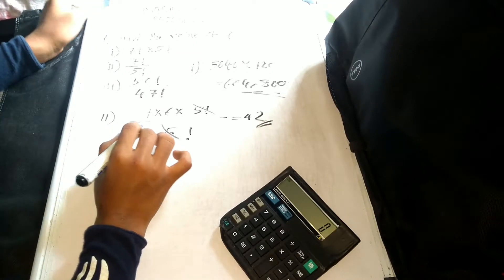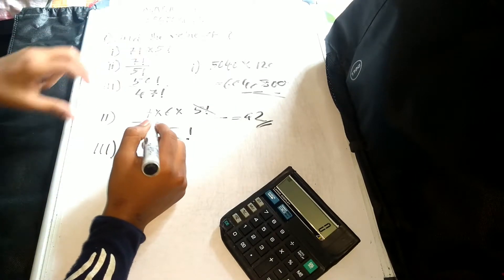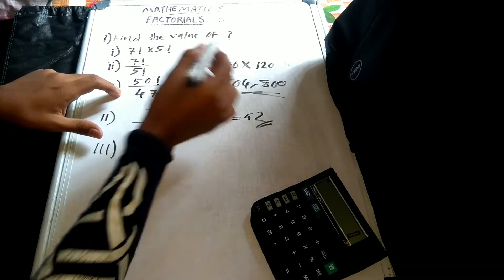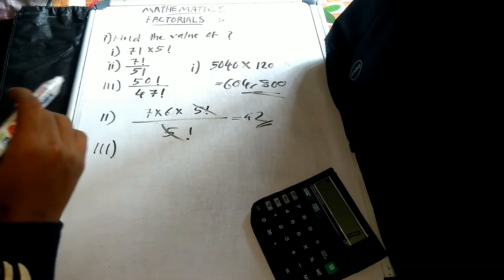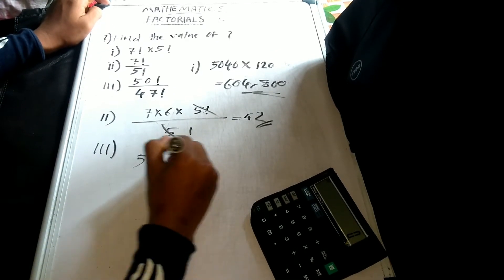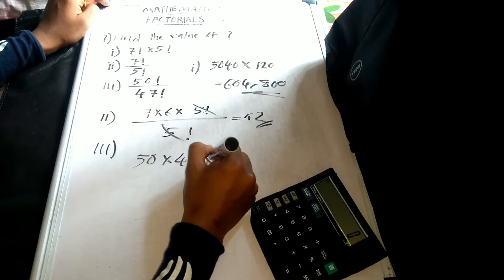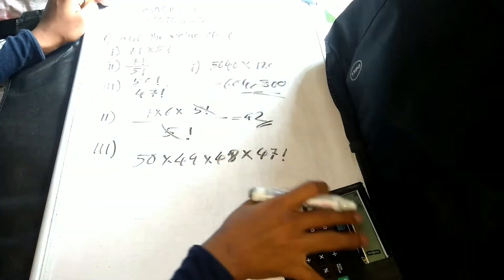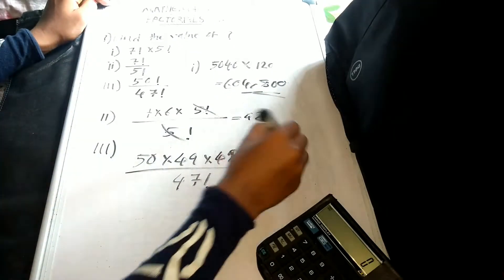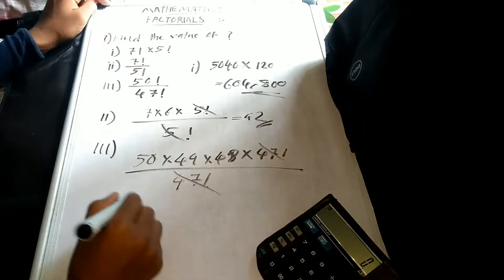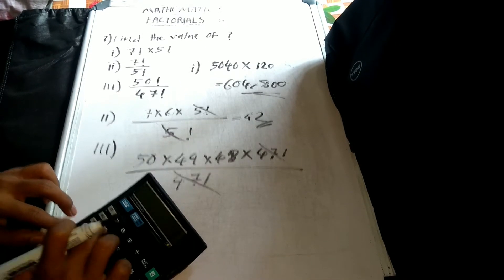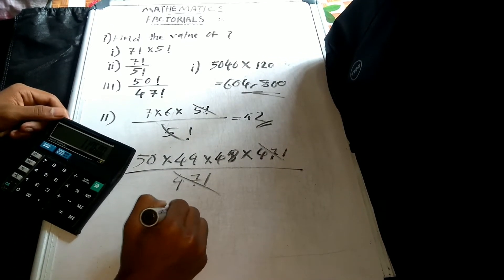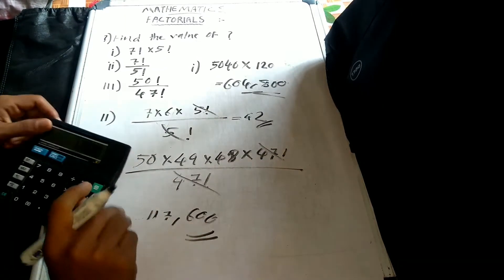Let's take a look at the next 3rd question. We have 15 factorial and a 40-star vector. So we have a question: 49 into 48 into 47 factorial, then divided by 47 factorial — so 47 factorial cancels as the denominator. This gives us 49 into 48, which equals 100 into 48.